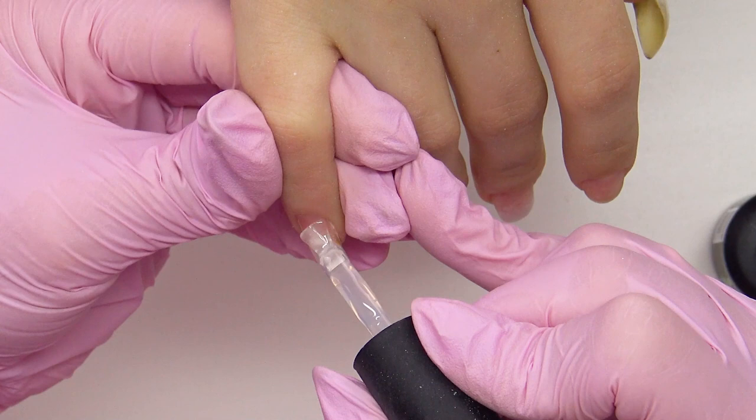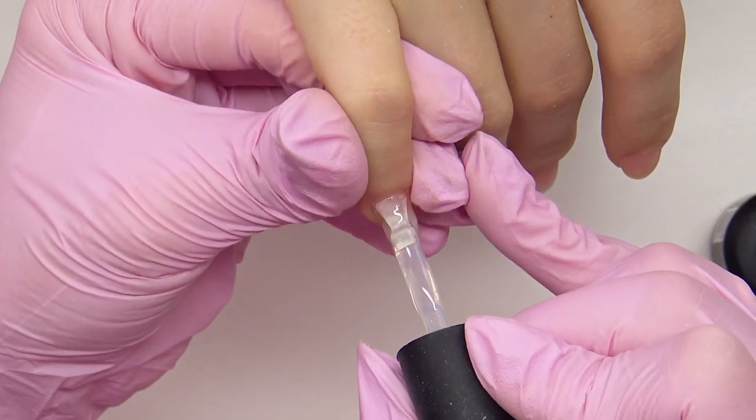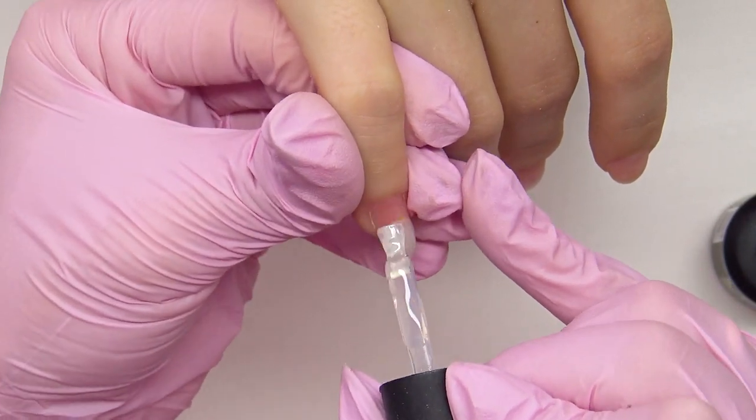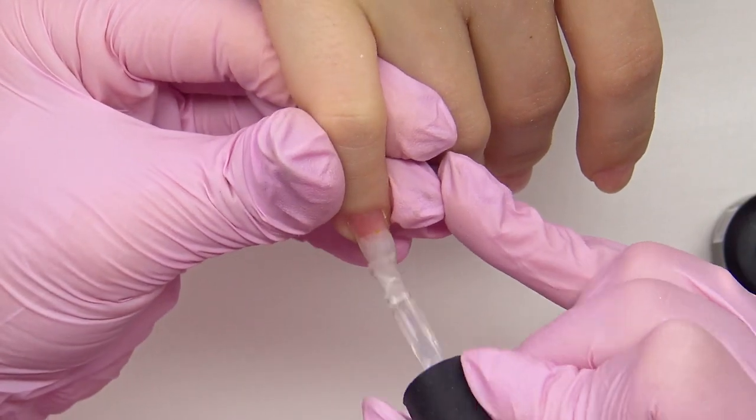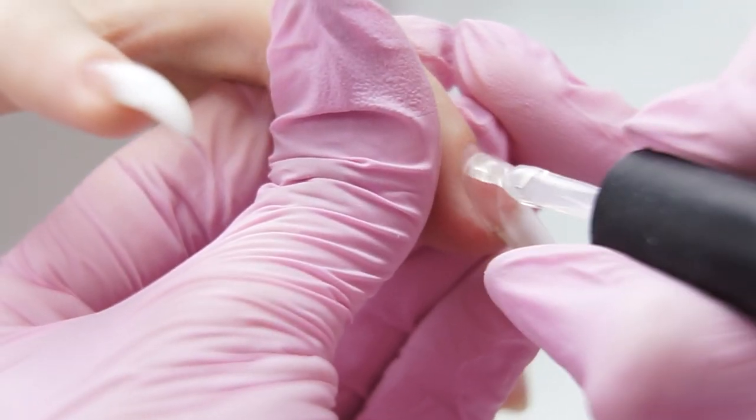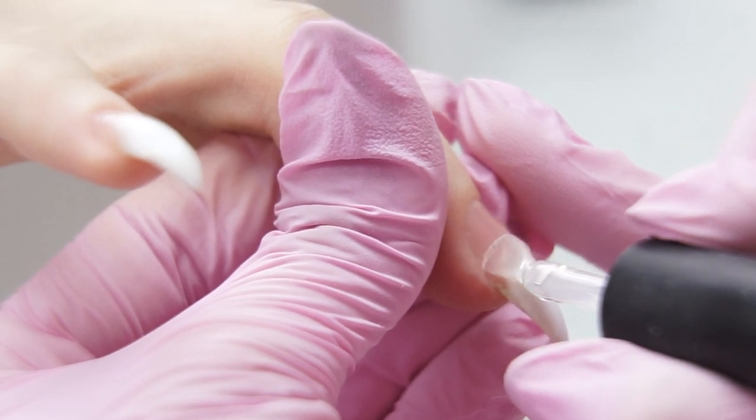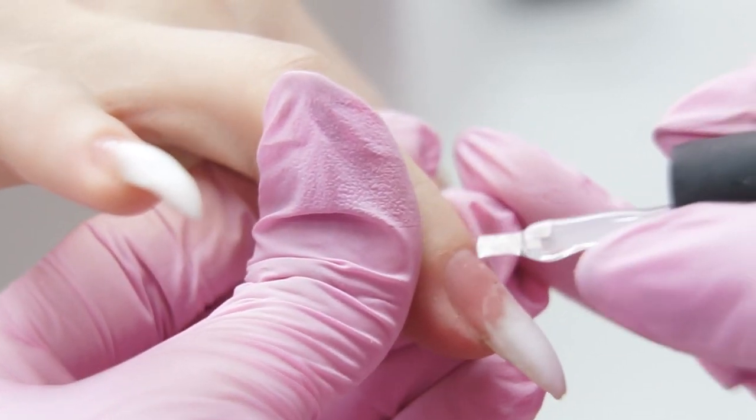You may apply the base not on the entire nail plate, but only where the overgrown part is. On the free edge, there will be a bonding with the next layer anyway. Send it to the lamp to cure for 30 seconds.